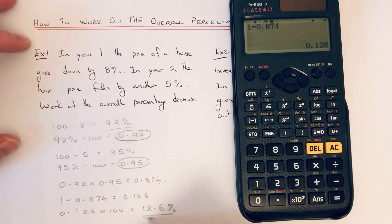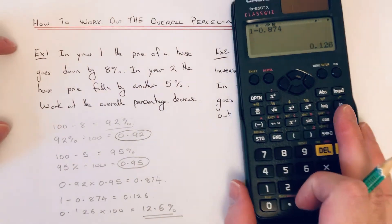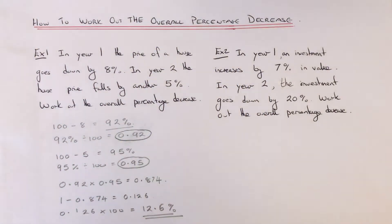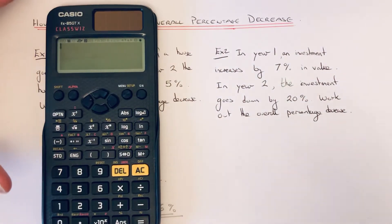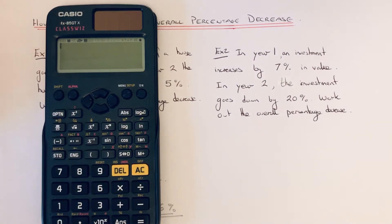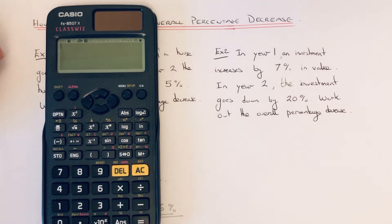That gives us 12.6 percent, which is the overall percentage decrease. Let's move on to example two. In year one, an investment increases by seven percent in value. In year two, the investment goes down by twenty percent. Work out the overall percentage decrease over the two years.